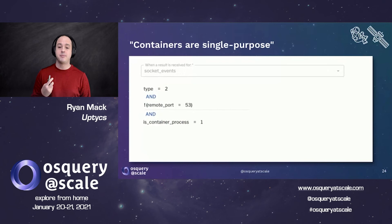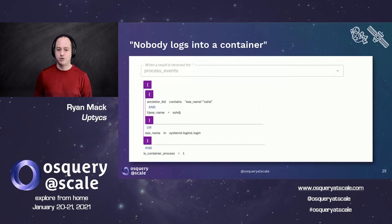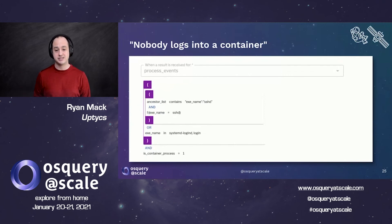Another example: if your application only communicates over TCP, here's an example of an event rule on the socket events table. If you detect an outgoing connection over UDP — excluding DNS — that's an indication that someone might be communicating to a command and control server from software running inside of your container. Here's another example around the fact that nobody logs into a container. If any process is invoked with its parent process being SSHD, or if you detect any login processes inside your container, you're probably detecting someone who has figured out how to log into your container that you weren't expecting. I think this is a useful signal in a container environment.